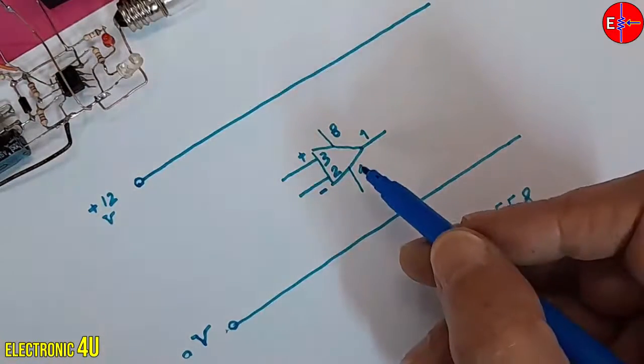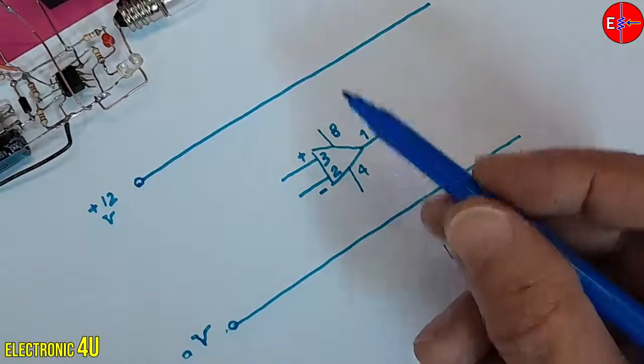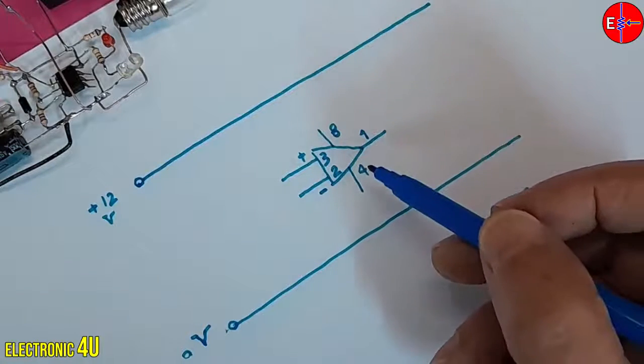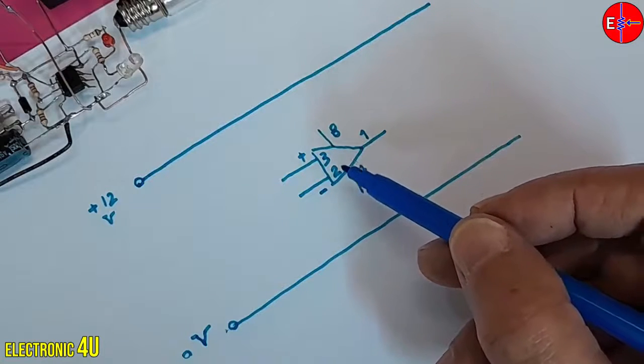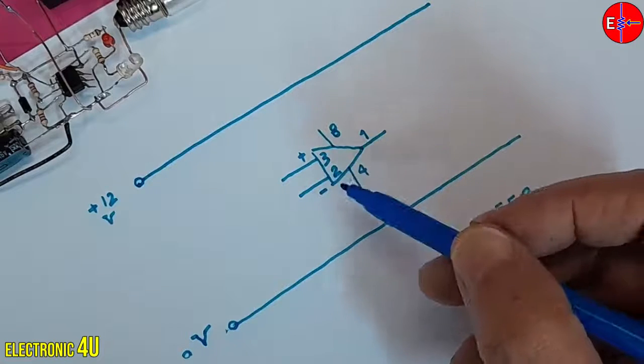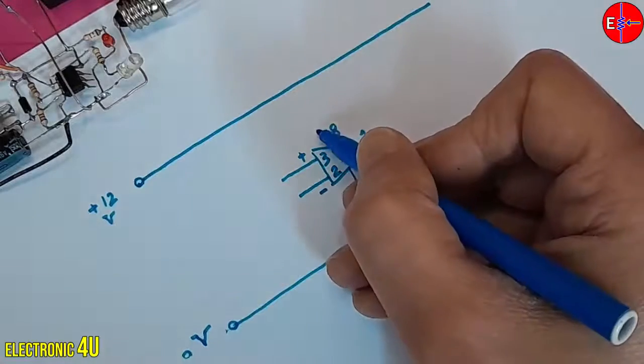Next, I connect pin 8 and 4 to positive voltage and zero volts respectively. The inverting and non-inverting inputs are also present here, and we'll proceed to explain two steps of building the circuit.